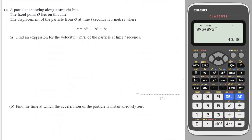Next question — we're just asked to work out the velocity so I'll differentiate. These questions are very similar in nature. 3 times 2 is 6, drop the power down by 1. 2 times 12 is 24, drop the power down by 1. And t to the 1: 1 times 7 is 7, drop the power down — t to the 0 is just 1, so 7 times 1 is 7.